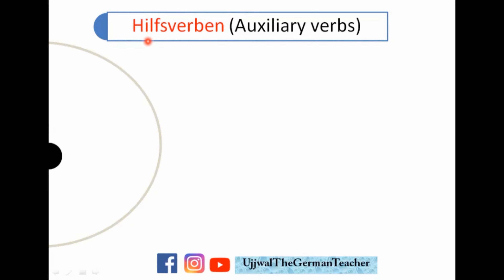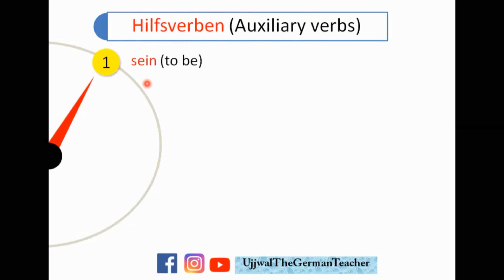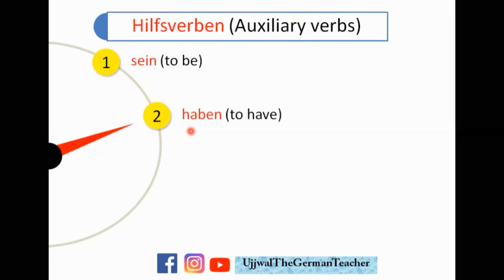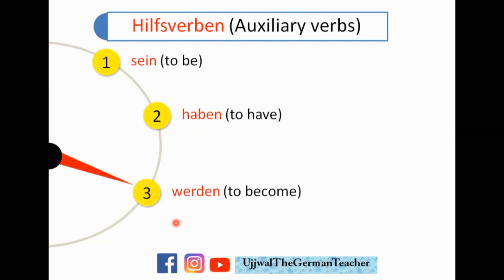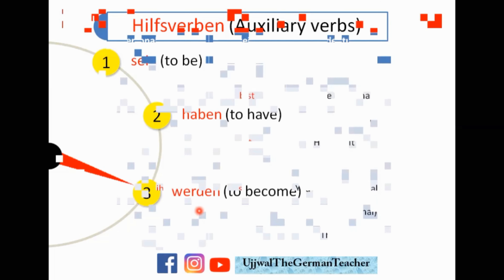Hilfsverben. Helfen means to help, Verben means verbs. So let's see what three verbs we have here. First one is Sein, to be. Second is Haben, to have. Third one is Werden, to become. Sein, Haben, Werden — so these are the three verbs we'll talk about.